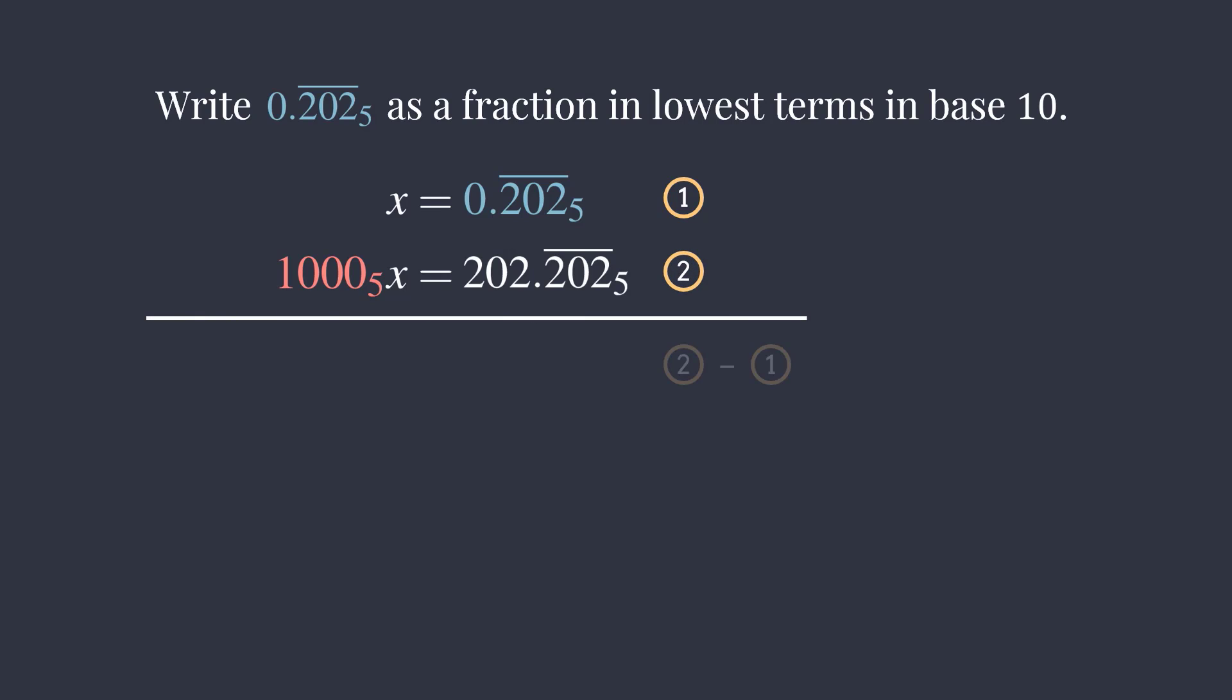If we subtract the equations, on the left side we have 1,000 base 5 minus 1 base 5 times x. On the right side, the fractional part got cancelled. So we are left with 202 base 5.